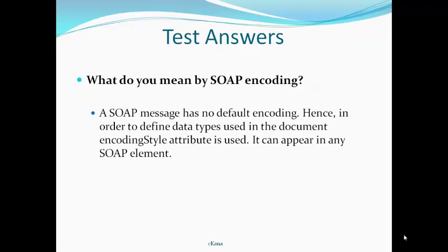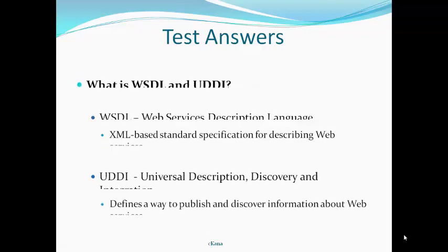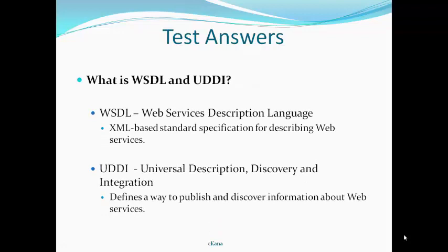Answer to Question 5 — What is meant by SOAP encoding? A SOAP message has no default encoding. In order to define data types in the document, the encoding style attribute is used, and it can appear in any SOAP element. Answer to Question 6 — What is WSDL and UDDI? WSDL stands for Web Services Description Language; it is an XML-based standard specification for describing web services. UDDI is Universal Description, Discovery and Integration; it provides a way to publish and discover information about web services.